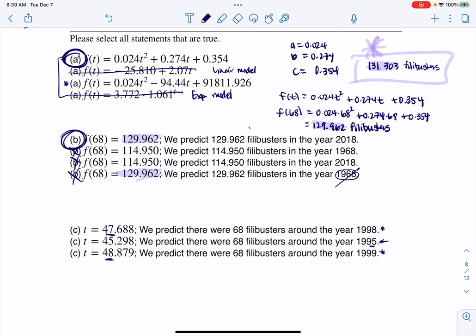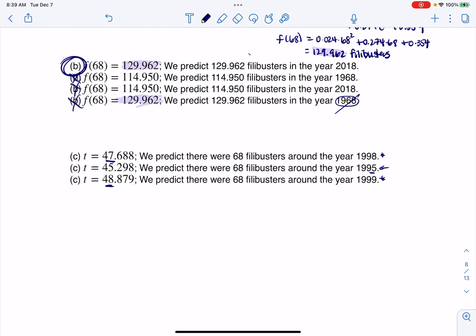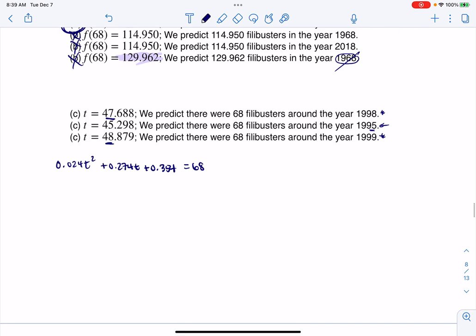Let's go ahead and set our function to 68. I'm going to take my model 0.024T² plus 0.274T plus 0.354 and set that equal to 68. This is a quadratic function, so I could use the quadratic formula. I could try and factor, I could try and complete the square. I'm absolutely going to use the quadratic formula here. So I'm going to set this to 0. We're going to have 0.024T² plus 0.274T. When I subtract those numbers, that would be minus 67.646.